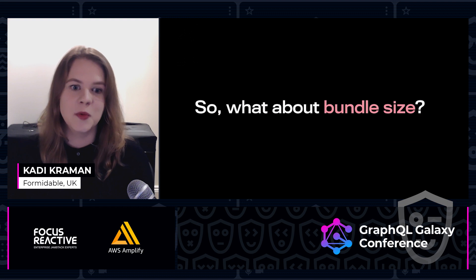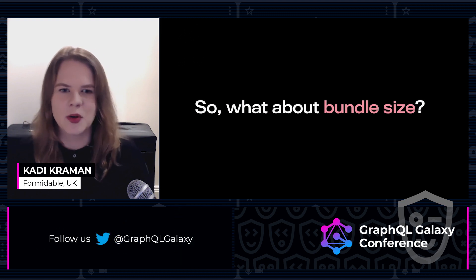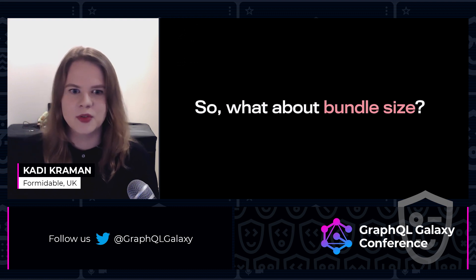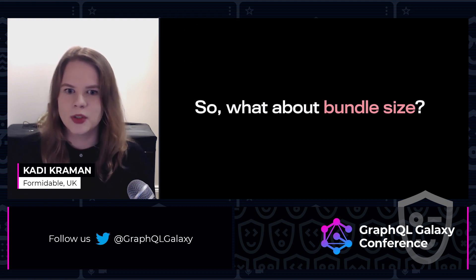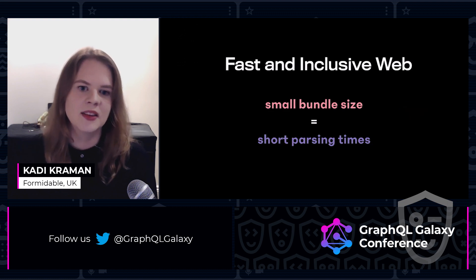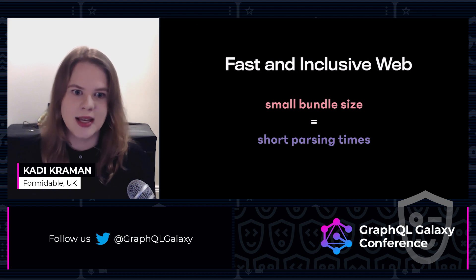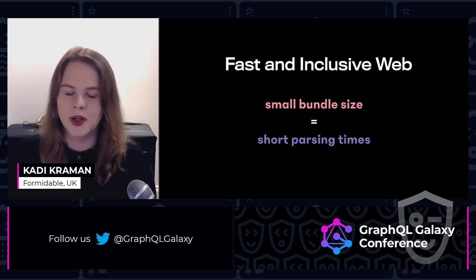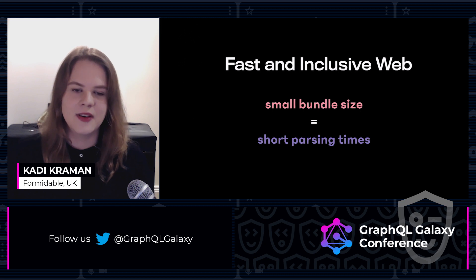And finally, what about bundle size? Often the first thing that comes up when talking about Urql is how small it is compared to alternatives. Rather than focusing on the numbers, it's important to focus on why effort was put into reducing the bundle size. The smaller the bundle size, the shorter the parsing times. GraphCache also has a low memory pressure impact and is fast on slow devices. We want to ensure that users in countries and areas around the world with slower internet connections still get the best possible experience — this leads to a fast and inclusive web.